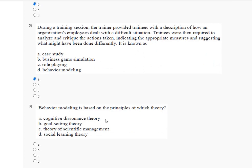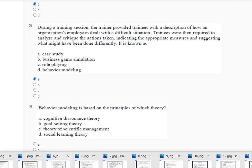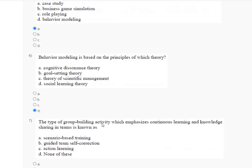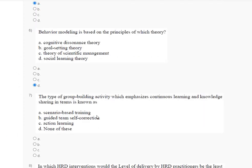The correct answer is Option D — social learning theory. The explanation of question number 6 is based on social learning theory. Question number 7: the type of group-building activity which emphasizes continuous learning and knowledge sharing in a team is known as the correct answer — Option B, guided team self-correction.